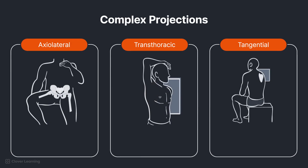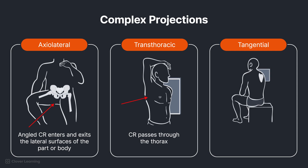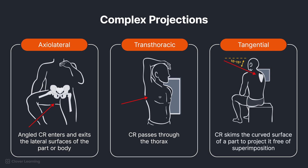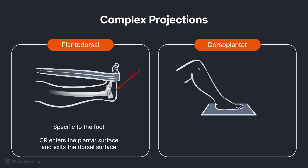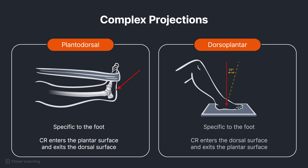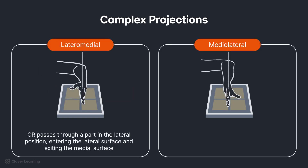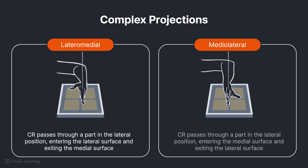There are some complex projections also used in radiology that technologists should be familiar with. Complex projections commonly used for special views of the upper and lower limbs include: Axiolateral — angled CR enters and exits the lateral surfaces of the part or body. Transthoracic — CR passes through the thorax. Tangential — CR skims the curved surface of a part to project it free of superimposition. Plantodorsal — specific to the foot, CR enters the plantar surface and exits the dorsal surface. Dorsoplantar — CR enters the dorsal surface and exits the plantar surface. Lateromedial — CR enters the lateral surface and exits the medial surface. Mediolateral — CR enters the medial surface and exits the lateral surface.